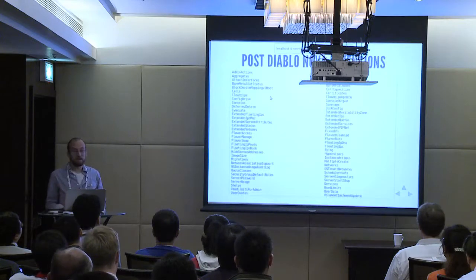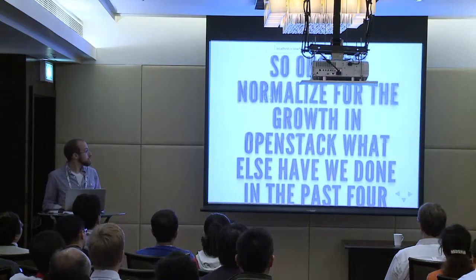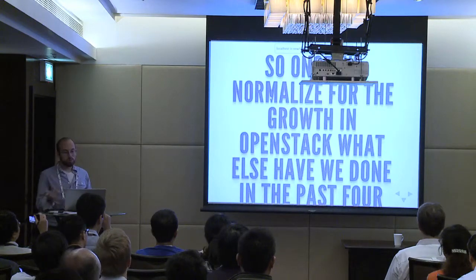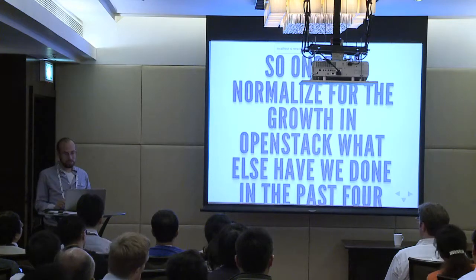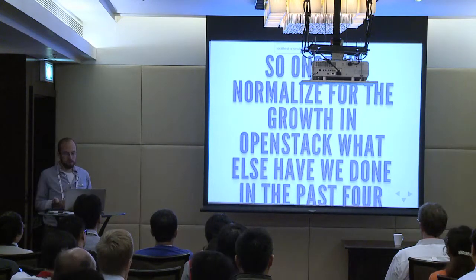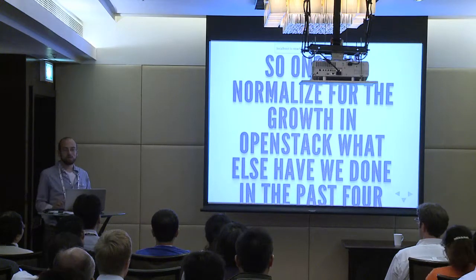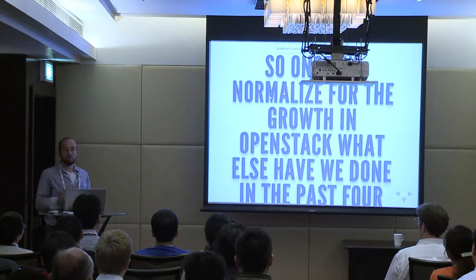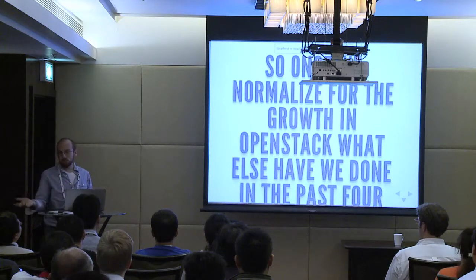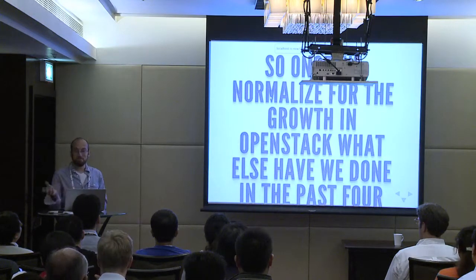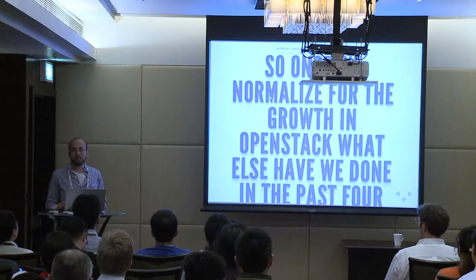So we're getting bigger and growing out, and also growing up. Once we normalize for that growth in project scope, what else have we been doing the past four releases? Part of the inspiration for this talk is that OpenStack infrastructure uses Diablo and a Havana-based cloud interchangeably — they use Rackspace and HP clouds. HP cloud is on Diablo, and Rackspace is on Trunk, which is essentially Havana. They both mostly work — so what have we been doing besides that? I wanted to know the answer, so I thought I'd give this presentation.